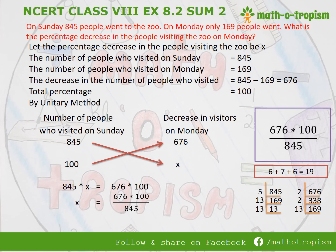When we do prime factorization of 845 by dividing by 5 we get 169, and 169 is 13 squared, giving factors 5, 13, and 13. Starting with 676 and doing prime factorization, we again get 169 in that also. So 169 is a common factor in both. For 845: 169 times 5 equals 845, and for 676: 169 times 4 equals 676. Cancelling 676 and 845 with the common factor 169, we get 4 over 5. Since 5 divides 100, cutting 5 and 100 gives 20, so 4 times 20 is 80 percent.